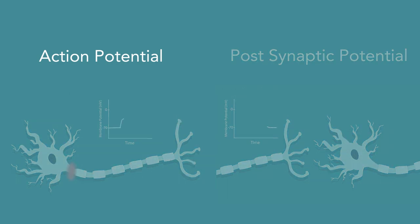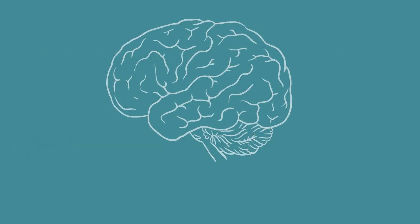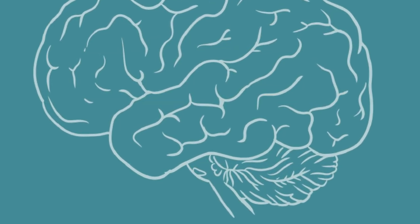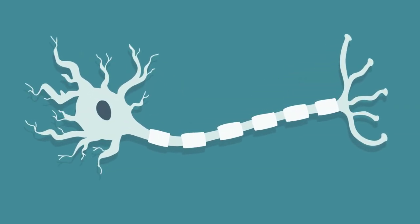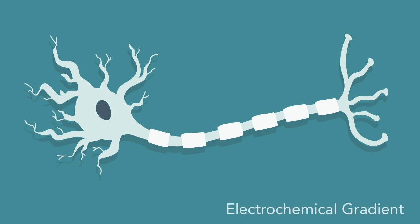First, action potentials. In the brain, neurons communicate with each other via electrochemical signals. The electrical signals arise from action potentials generated within each neuron. An action potential is the rapid change in voltage within a neuron. The process leading to an action potential begins with a difference in charge between the inside and outside of the neuron, called an electrochemical gradient.